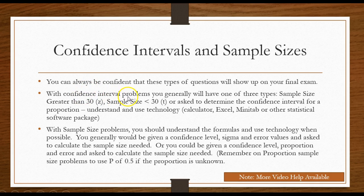With confidence interval type problems, you generally have three types. A sample size greater than 30 would be a Z. A sample size less than 30 would be a T. And note on these also whether or not you know your population standard deviation is often discussed here also. So sample size greater than 30, less than 30, or you may be asked to determine the confidence interval for a proportion.